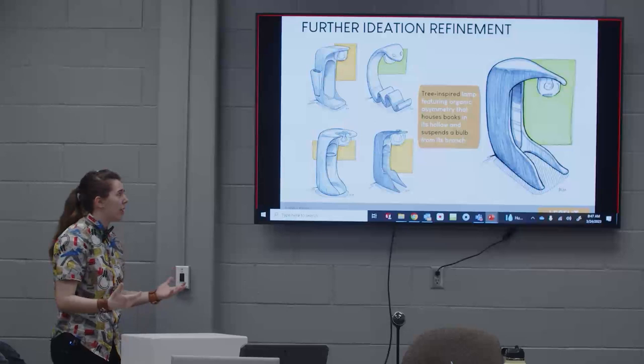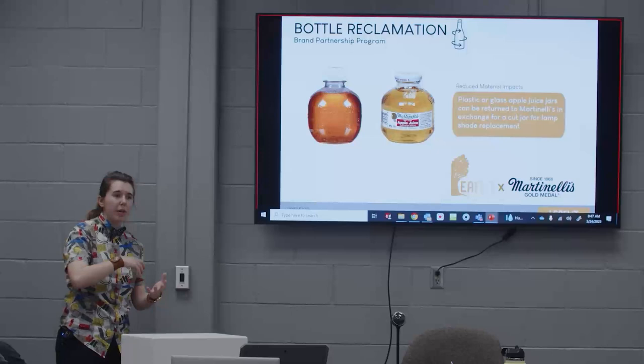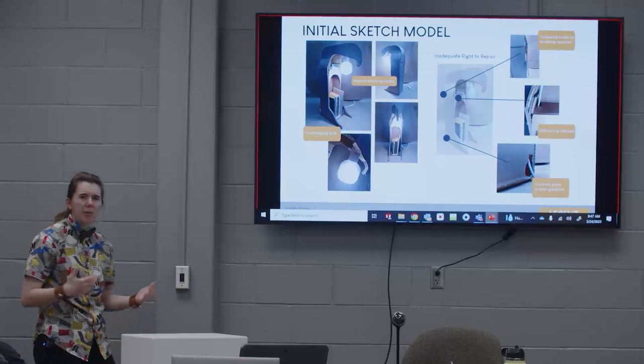I was going forward with these forms. There was some inspiration coming forward with that tree. How would I suspend a bulb and potentially hold books, as it would be a reading lamp? Especially holding this jar, I really love the idea of being able to have a reclamation process with this company, work together, have a partnership to celebrate this jar where it could be sent back to the company, and people could have their jar cut and fit to be the bulb shade. But initially, this model coming from the sketches just wasn't doing it.